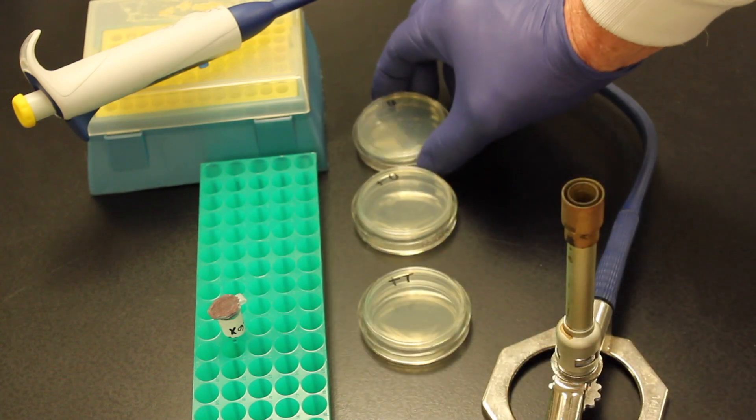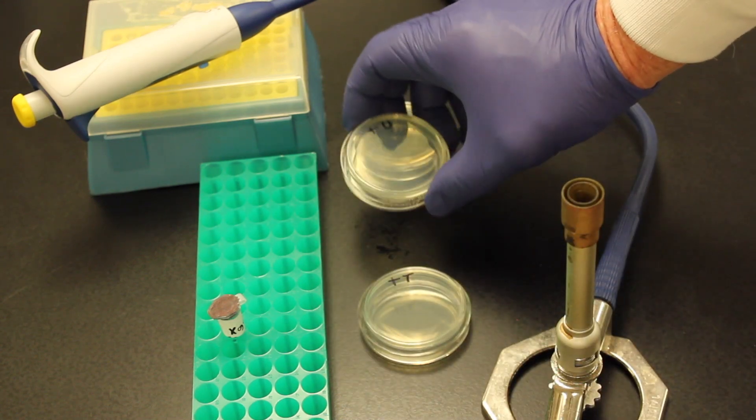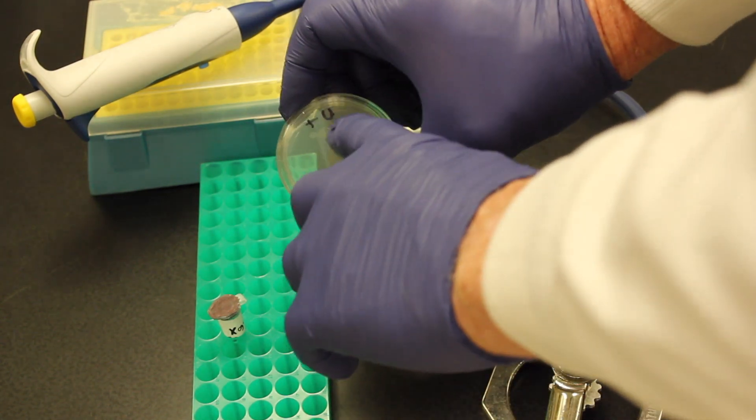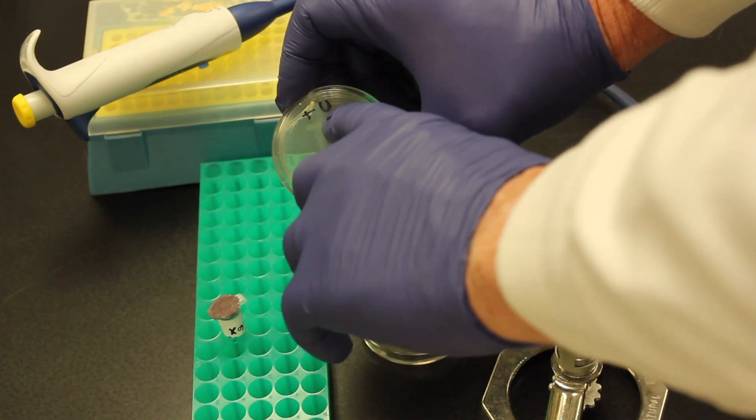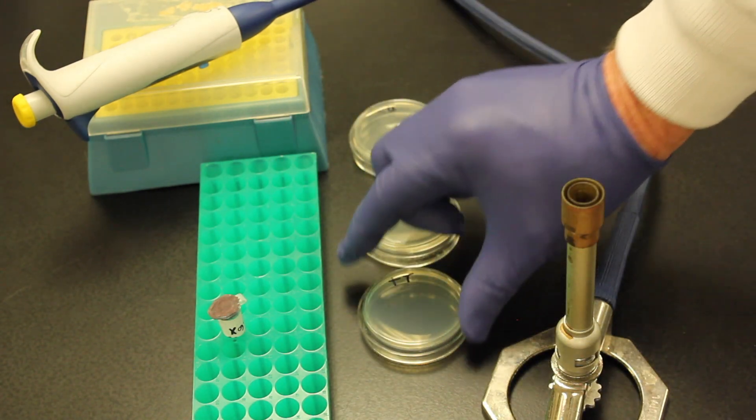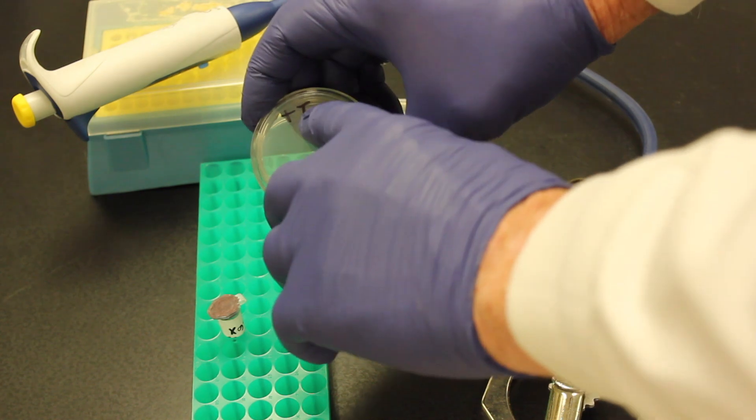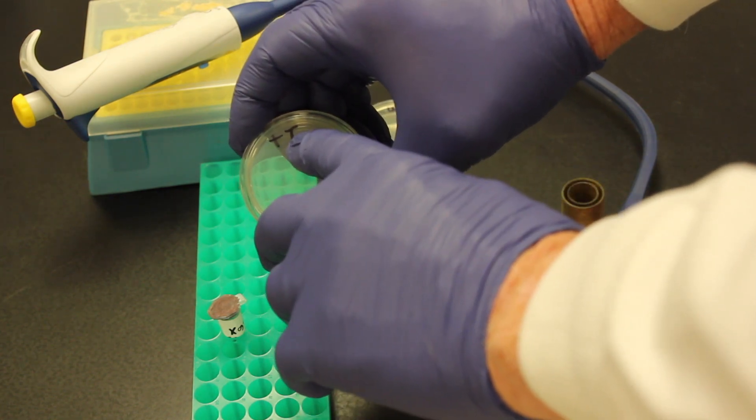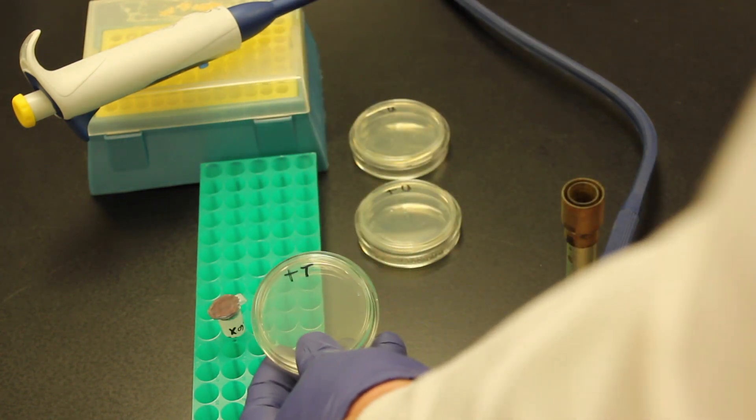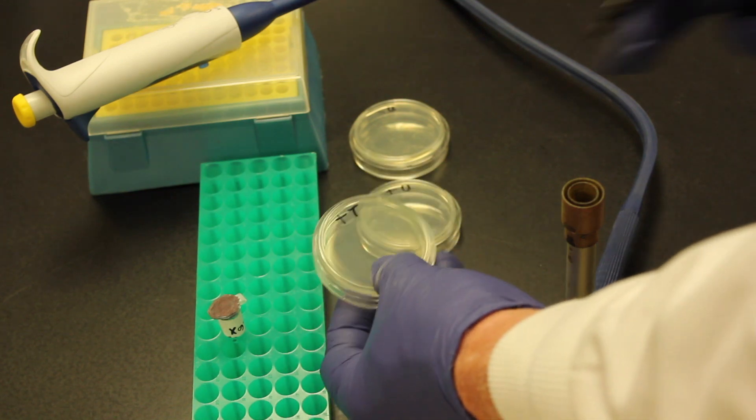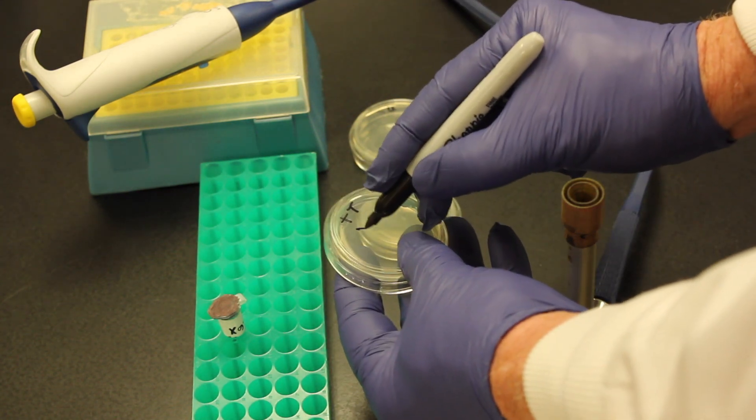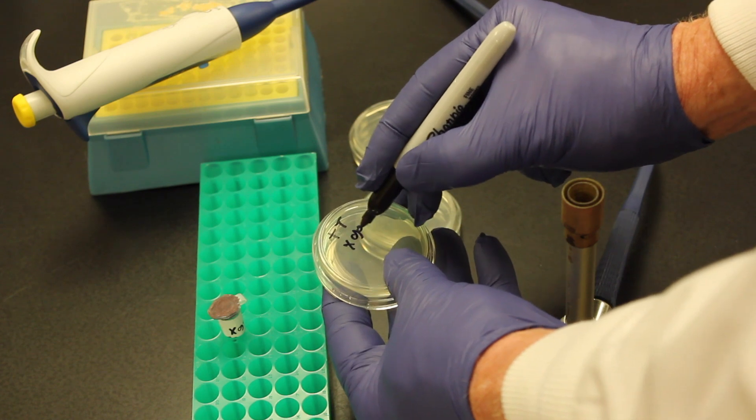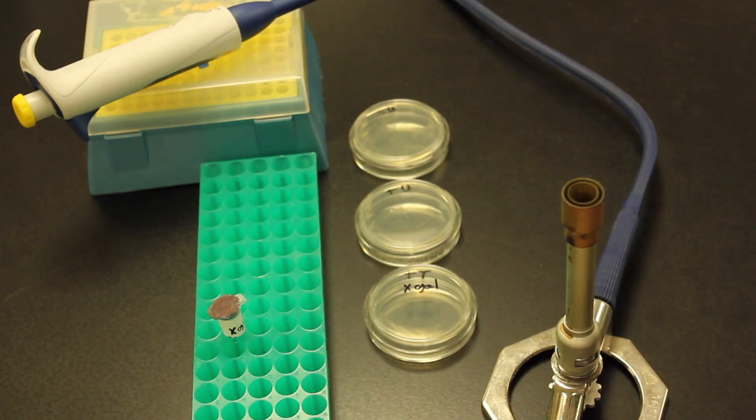It's labeled with a U because I'm going to put untransformed bacteria on it. This is a plus with a U, so it has ampicillin, it will get untransformed bacteria. This is a plus with a T, it has ampicillin, and it is going to get a T, which means that it's transformed. And then I'm also going to add X-Gal to that plate.